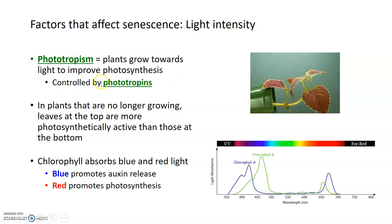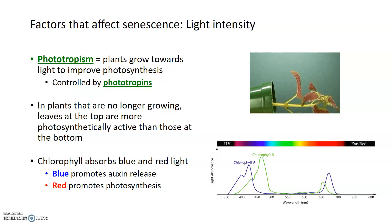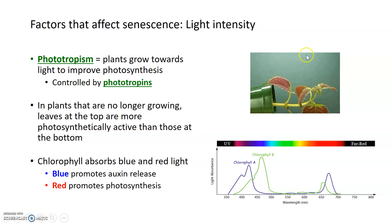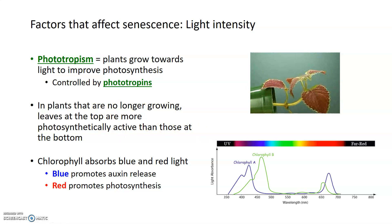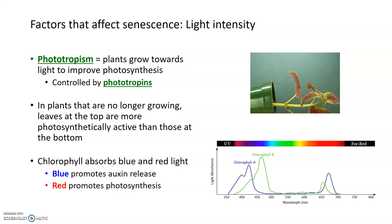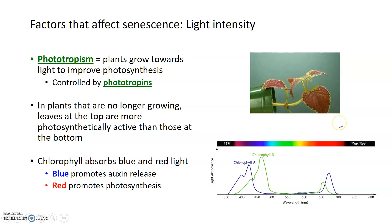Plants have a particular property known as phototropism, where they will grow towards light in order to improve their photosynthesis and make more food. This process is controlled by several receptors called the phototropins. In plants that are no longer growing — like a mature plant — they're no longer doing that. So the leaves at the top of the plant are technically more photosynthetically active than those at the bottom, as they're more exposed to sunlight.